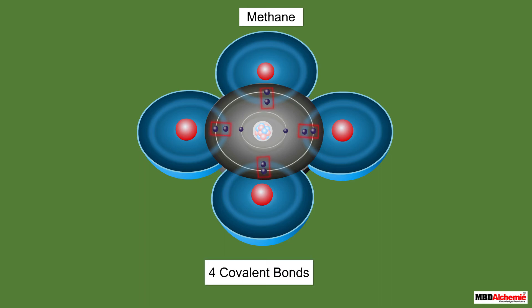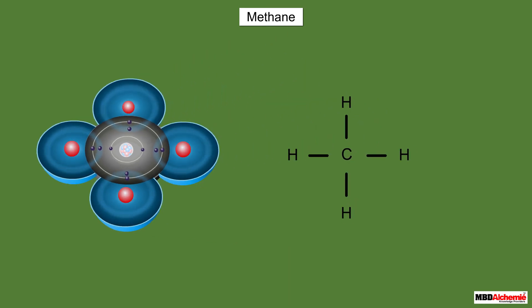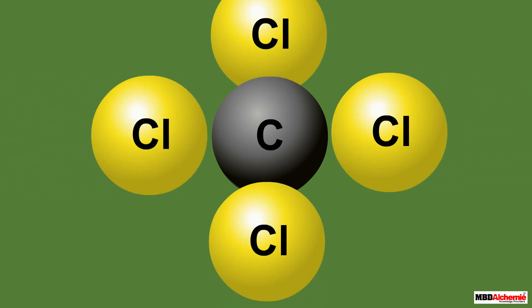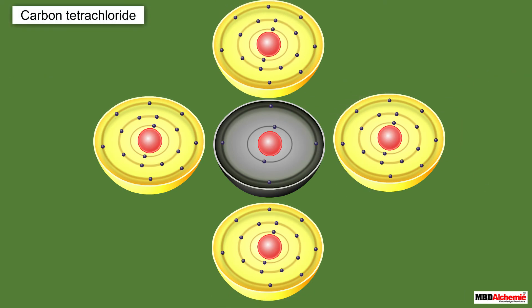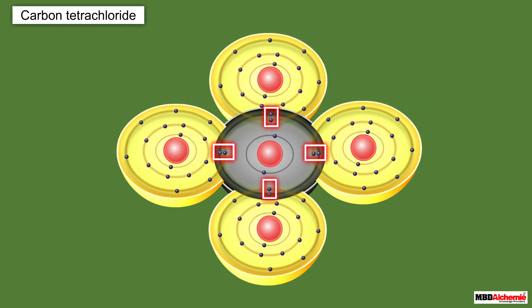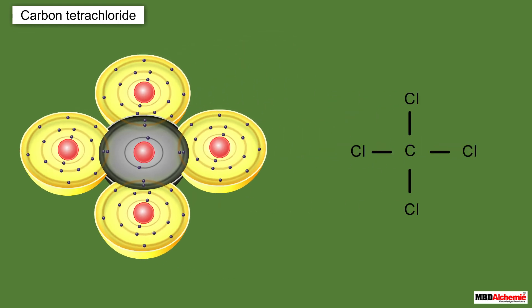The carbon atom makes four covalent bonds with four hydrogen atoms, resulting in the formation of a molecule of methane. A molecule of methane can be represented with lines between C and H representing the covalent bonds. Similarly, carbon forms covalent bonds with four chlorine atoms. Each chlorine atom has seven electrons in its outermost shell, so it shares one valence electron of the carbon atom. The carbon atom thereby gets eight electrons in its valence shell, and a molecule of carbon tetrachloride (CCl4) is formed.